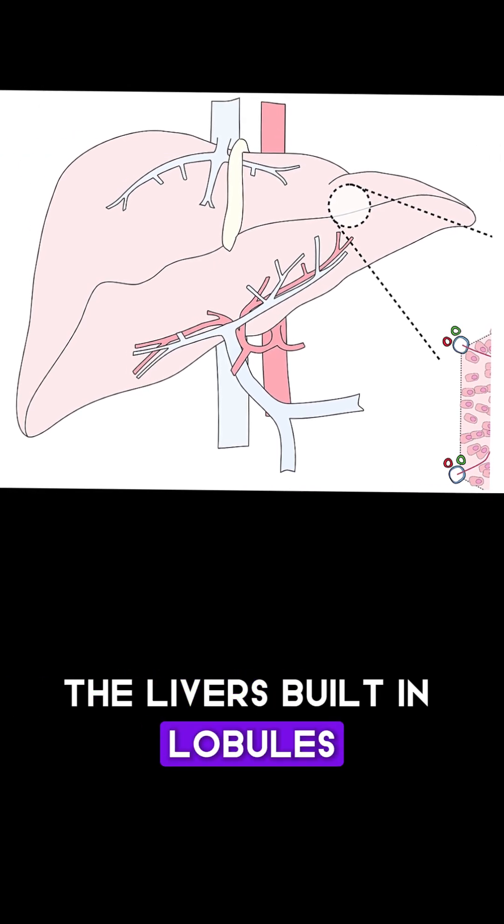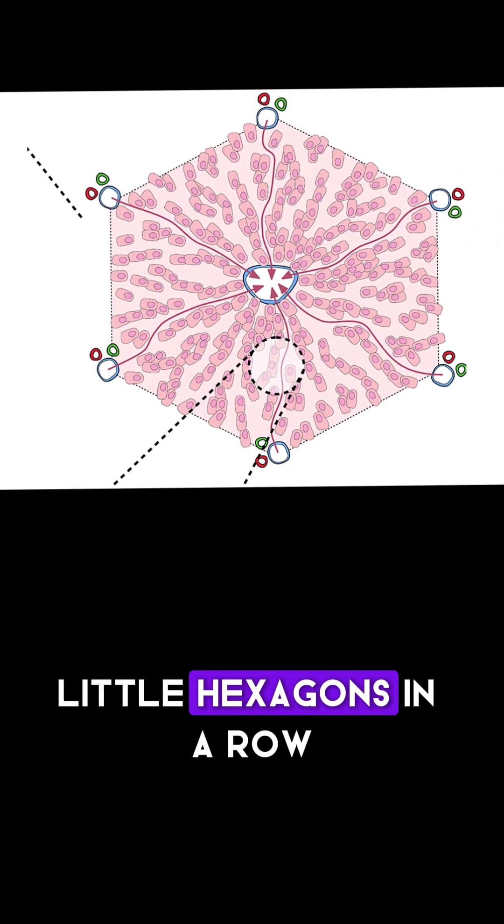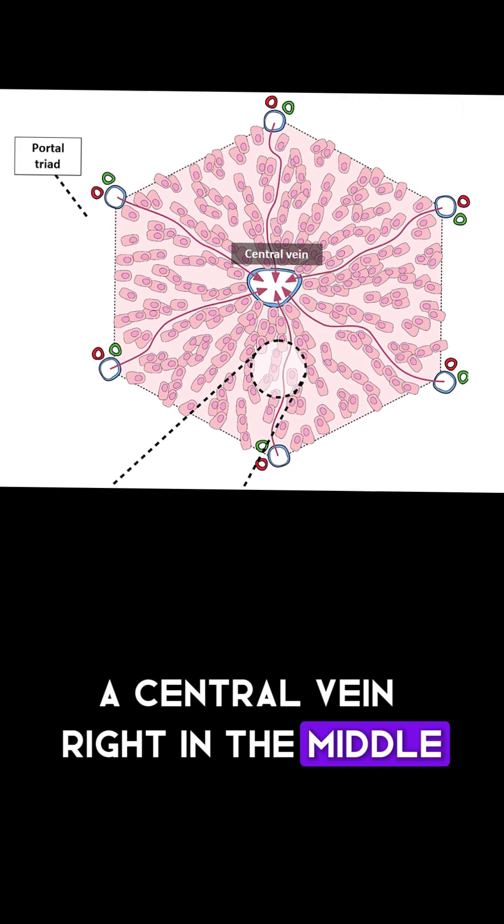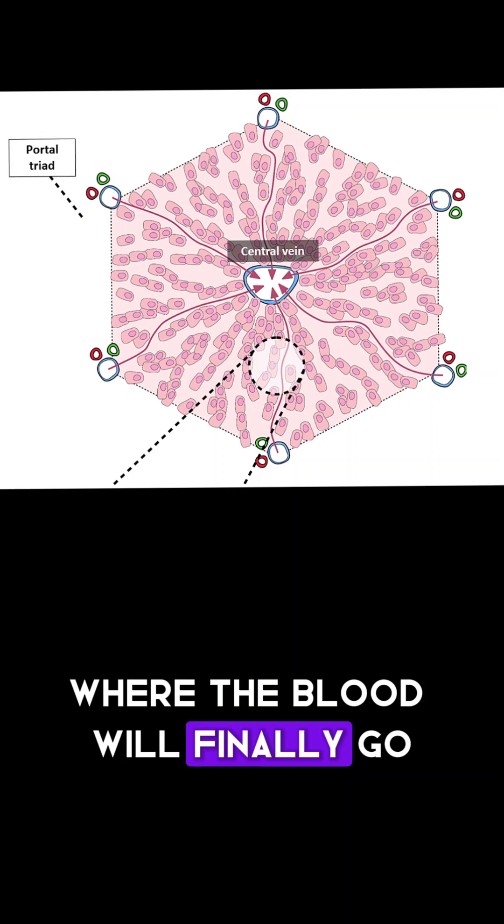The liver is built in lobules, little hexagons in a row. A central vein right in the middle, where the blood will finally go.